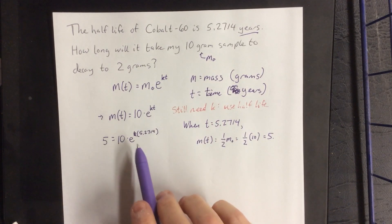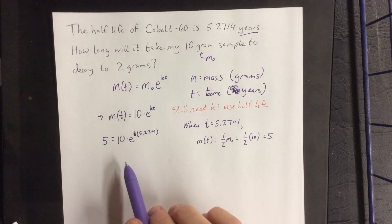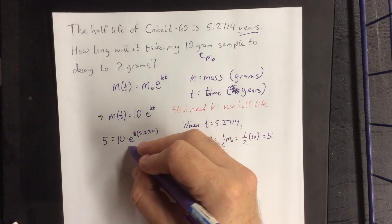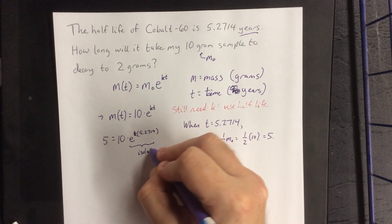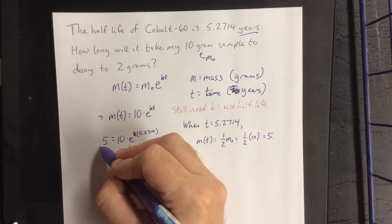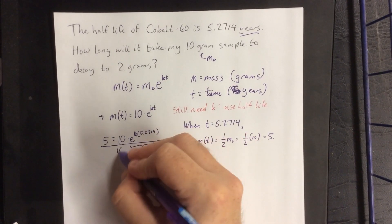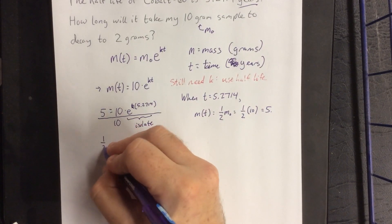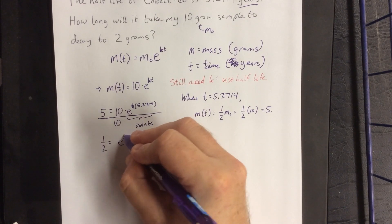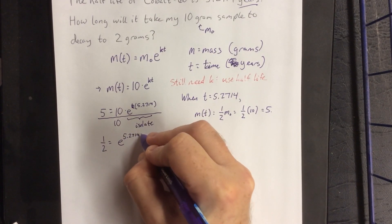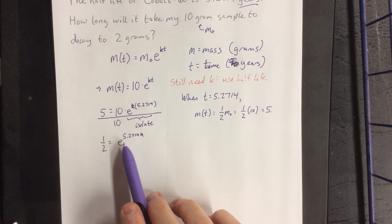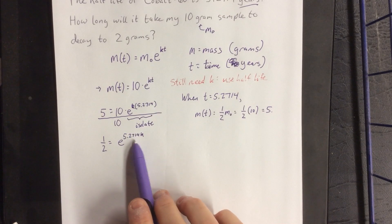So in solving for k, k is part of an exponent, which makes this an exponential equation. It means that eventually we're going to have to use logarithms to get that exponent out of there. However, we need to isolate the exponential term first. The way that we can isolate this is to divide both sides by the coefficient of that thing. Left-hand side is now 5 over 10. 5 over 10 reduces to 1 half, and it is not a coincidence that the number 1 half shows up in a half-life problem.